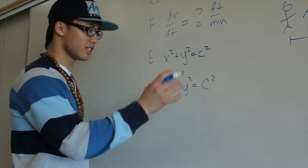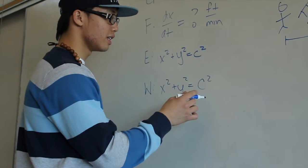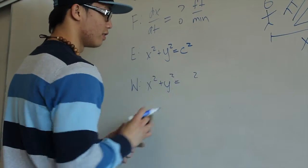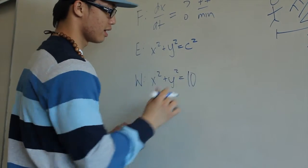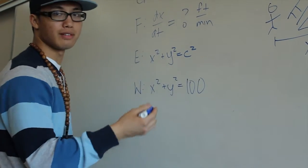Before we differentiate the equation, we have to remember that c is a constant. So we're going to substitute the c or 10, which can just be said as 100 after you square it.